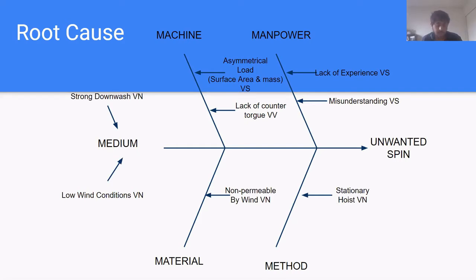Below is a fish tree diagram demonstrating the root cause of the problem, unwanted spin on the helicopter load. Physical reasons for spin are downwash caused by a helicopter in low wind conditions. Problem is worsened when the load is surrounded by non-wind permeable material and through lack of experience and misunderstanding on the manpower side. Therefore, it becomes desirable to implement an automated solution that removes human error.